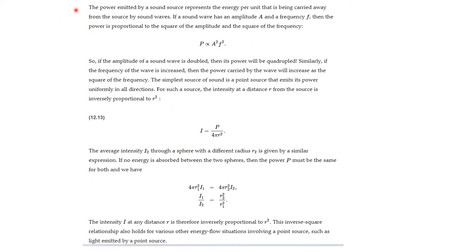The power emitted by a sound source represents the energy per unit that is being carried away from the source by sound waves. If a sound wave has an amplitude A and a frequency F, then the power is proportional to the square of the amplitude and the square of the frequency. That means if the amplitude of a sound wave is doubled, then its power will be quadrupled times 4. Similarly, if the frequency is increased, the power is increased by the square of the frequency.